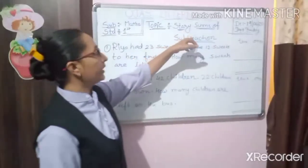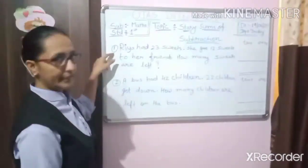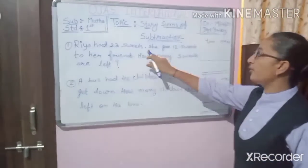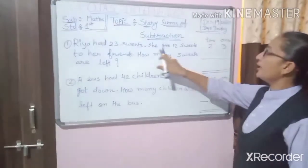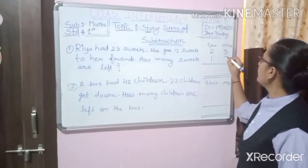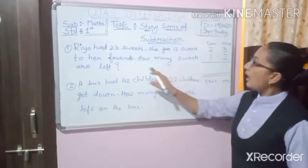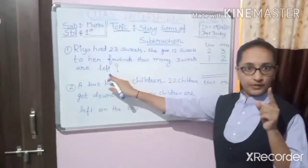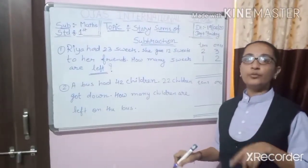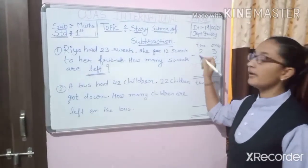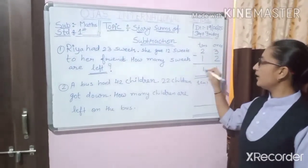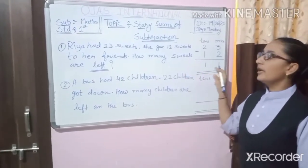Now today's topic is story sums of subtraction. Number 1: Ria had 23 sweets — 2 tens, 3 ones. And she gave 12 sweets to her friends — 1 ten, 2 ones. Now how many sweets are left? Whenever the word 'left' comes, we have to do subtraction. So 3 minus 2 is 1, and 2 minus 1 is 1. So now Ria had 11 sweets.